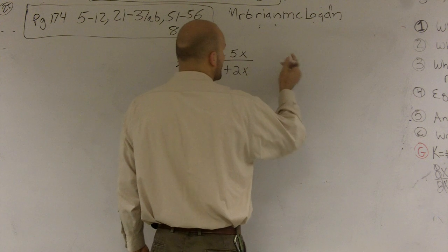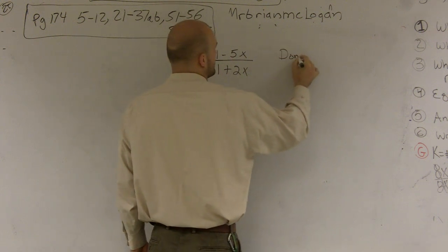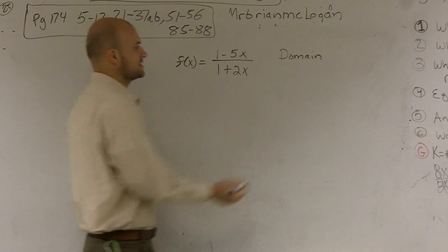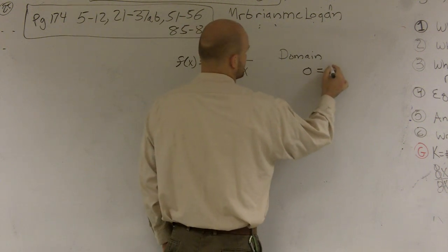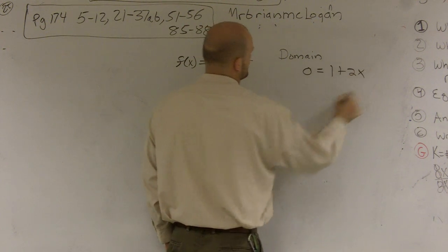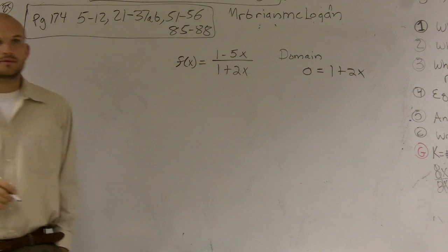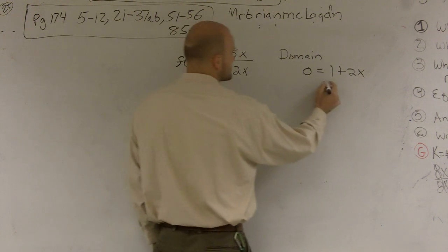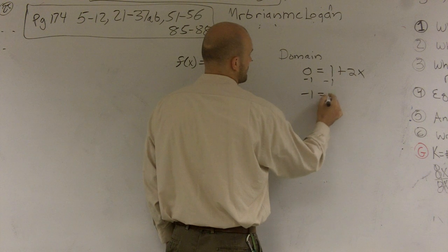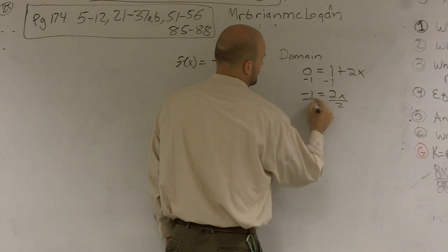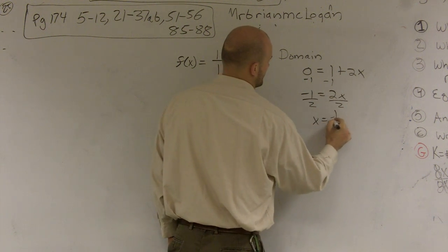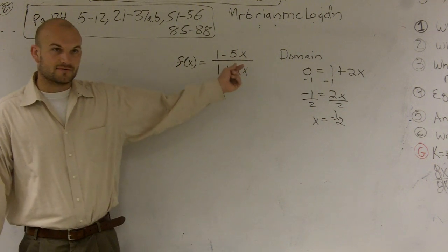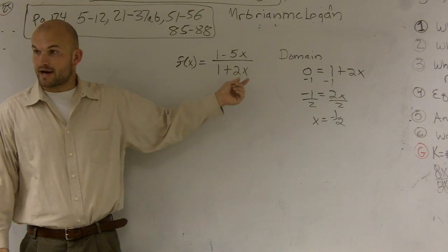So when I want to find the domain, I'm going to find the zeros of my denominator. So I say zero is equal to 1 plus 2x. So therefore, I take a look and I solve for x. Subtract 1 on both sides.